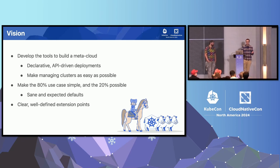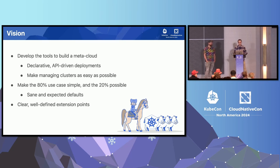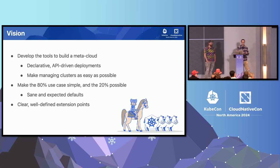So what is the vision for this project? This project started almost seven years ago, and the vision overall was to build the Metacloud. We're getting really close to what it is today, which is declarative APIs that are production-ready. We want to make managing clusters and fleets of clusters as easy as possible — upgrades, health, everything. We make the 80% use case simple, and the 20% possible.